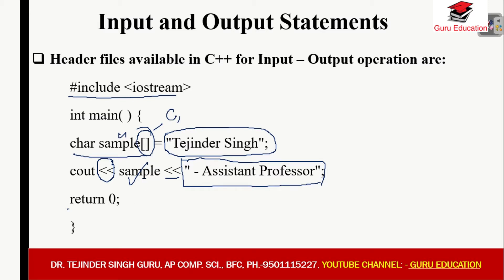Return 0. So the output will display the variable value along with the label text. This is the actual working of cout.